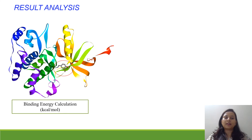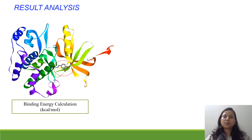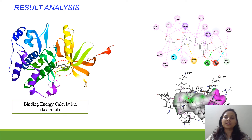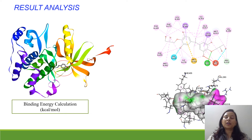In the result analysis, first we look at the binding energy score. The binding energy is expressed as a negative value, and the most negative number indicates the strongest binding interaction. From the result analysis we also extract the hydrogen bond interactions and hydrophobic interactions — essentially what kind of interactions form between the ligand and protein. Based on these, we identify the perfect hit or lead molecule that behaves like a drug molecule for that particular receptor.